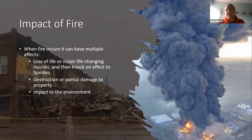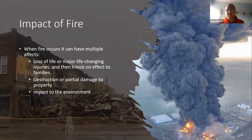We must not forget the damage to the environment — fire has a massive impact on the environment. Even the measures we use to extinguish a fire can harm it. For example, foam is exceedingly damaging to the environment, as are certain chemicals. So it's not just the impact of loss of life; there are impacts across many other areas as well.